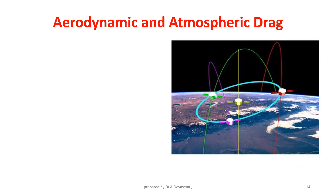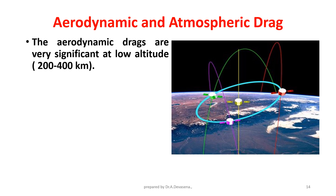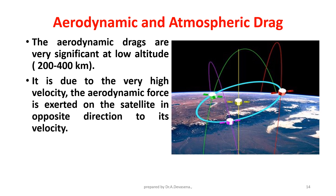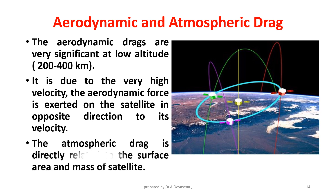Aerodynamic and atmospheric drag. The aerodynamic drags are very significant at low altitude, that is 200 to 400 km. It is due to the very high velocity. The aerodynamic force is exerted on the satellite due to its velocity. The atmospheric drag is directly related to the surface area and mass of the satellite.